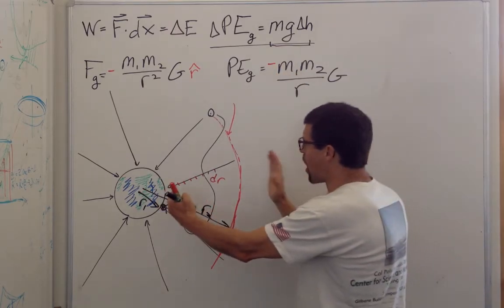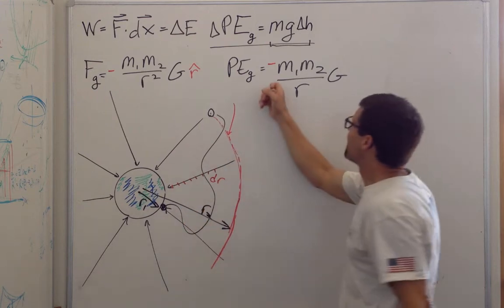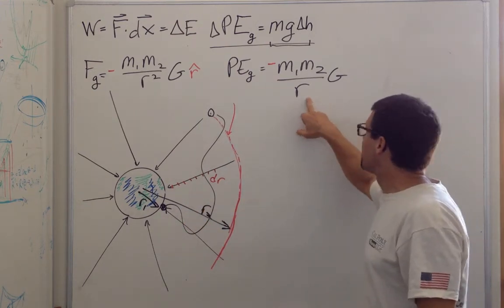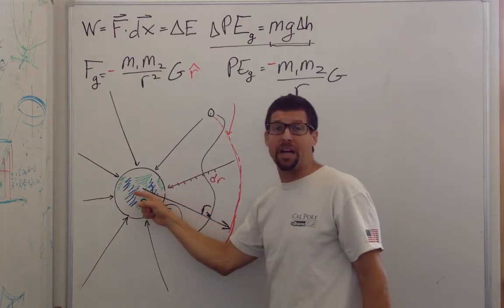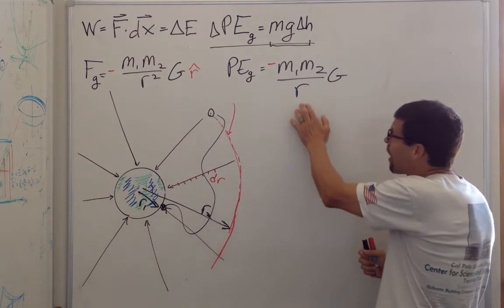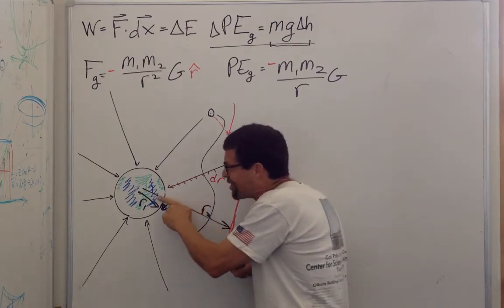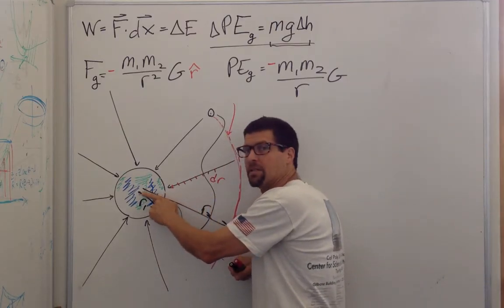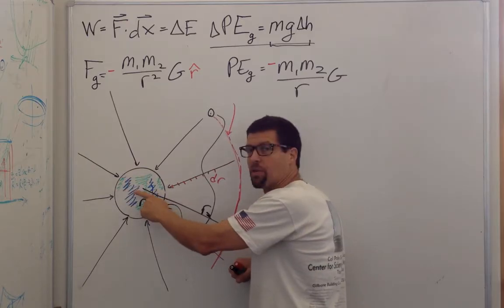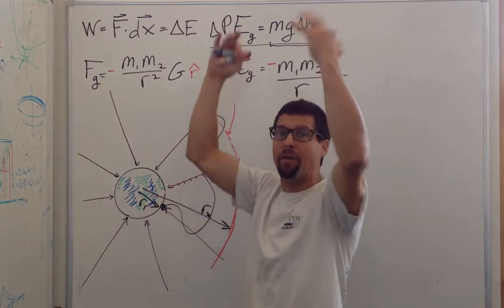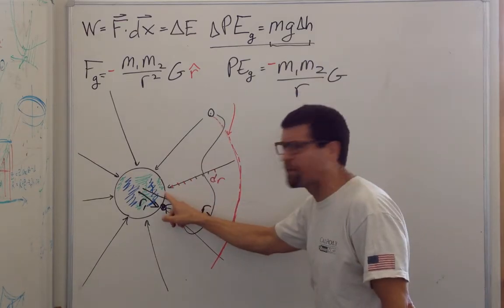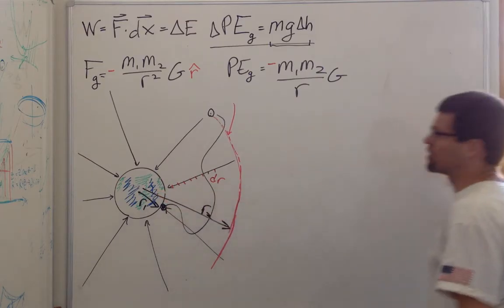Because as R gets smaller, we have more and more negative potential energy. The extreme is if R went to zero, would the potential energy go to negative infinity? And that's not true because once you start getting underneath the surface of the planet, the pull of gravity actually decreases rather than increases because there's mass above you pulling you up. So we just say that this works only to the surface of the planet and outside.